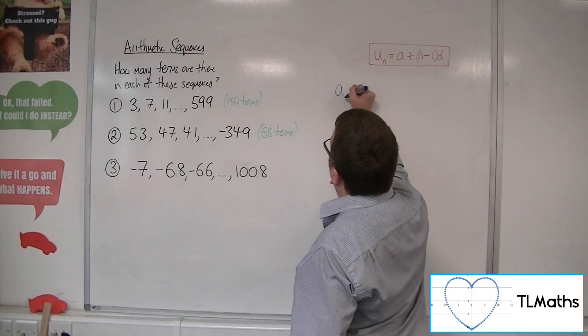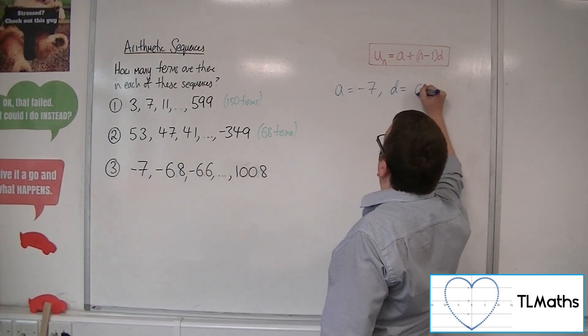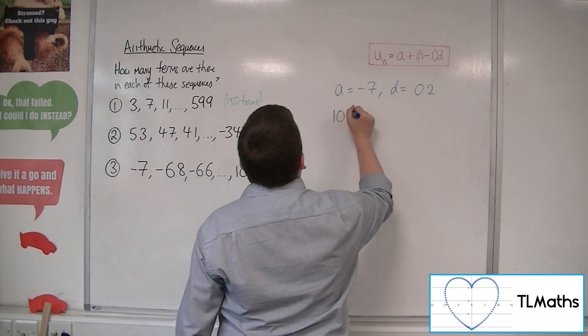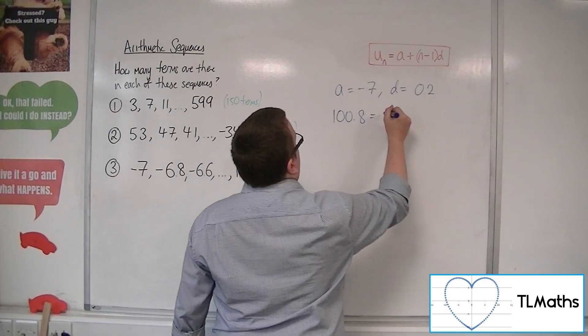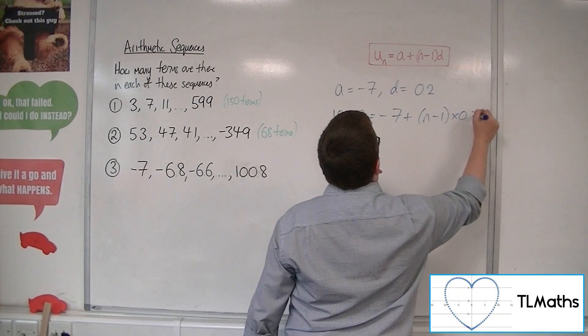First term is minus 7. The common difference is 0.2. That's what I'm adding on each time.